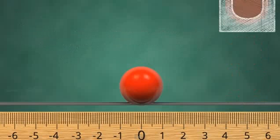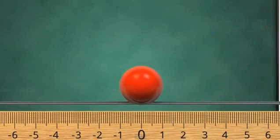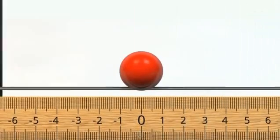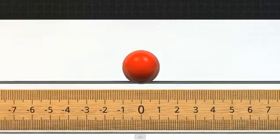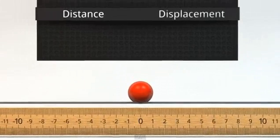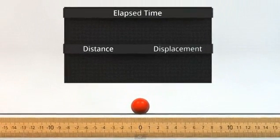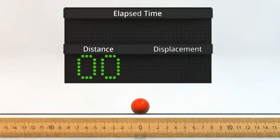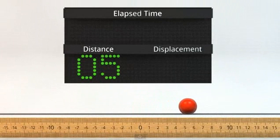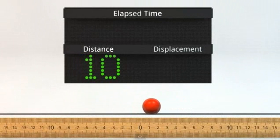What about if we want to move the original red ball to a new position? To do this, we'll have to talk about a few new ideas. Distance tells us how much ground the ball has covered since it started moving. Notice how any movement of the ball adds to the distance.